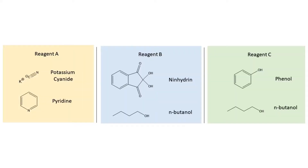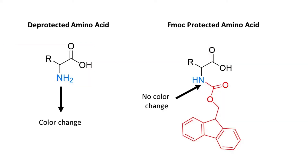The ninhydrin test involves three reagents: Reagent A, which is potassium cyanide and pyridine; Reagent B, which is ninhydrin and N-butanol; and Reagent C, which is phenol and N-butanol. When these reagents are mixed with beads of resin while heated, the beads in solution will undergo a color change if there are free amines, such as after deprotection, or they will remain colorless when there are no free amines, such as after coupling.